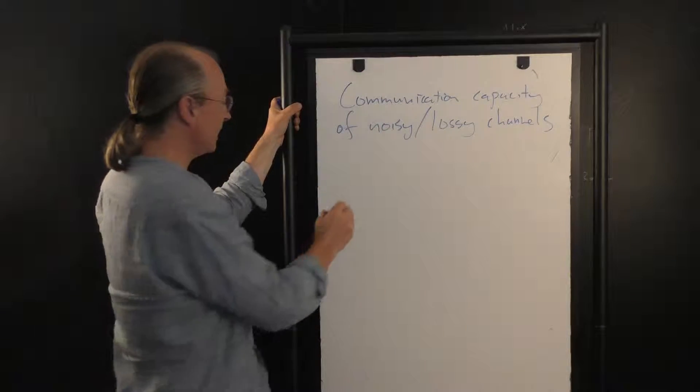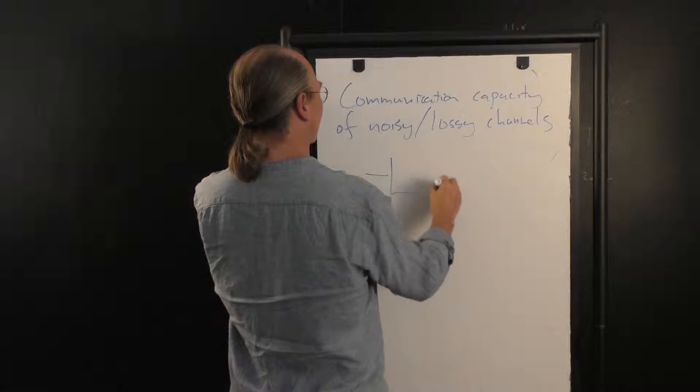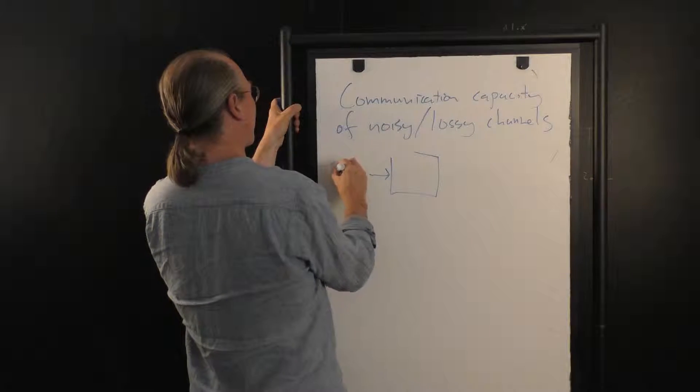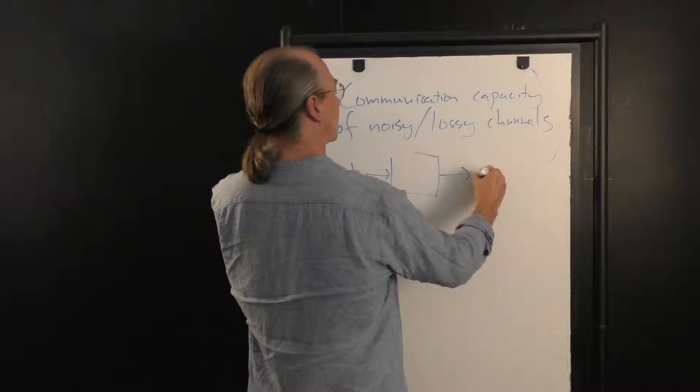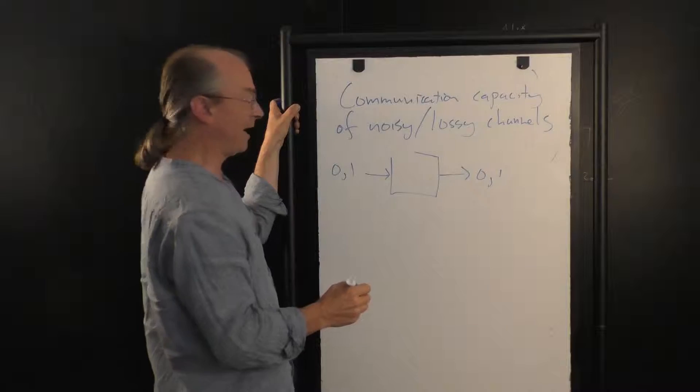So the idea is we have a channel, we're going to represent as a box. We have information that could go in, so we could have 0, 1 for instance if it's a binary channel come in.